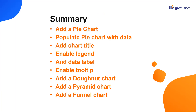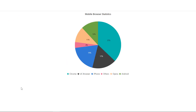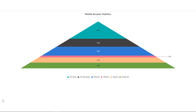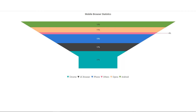Let me quickly summarize. You've learned how to create accumulation charts like pie, donut, pyramid and funnel. You have also learned how to add a title, data label, legend and tooltip to these charts. You can download a working example from the GitHub link in the description below. You can also check if you're eligible for our community license, which provides a free license key to use our products. Thank you for watching. If you found this video useful, give it a like and subscribe to our channel.